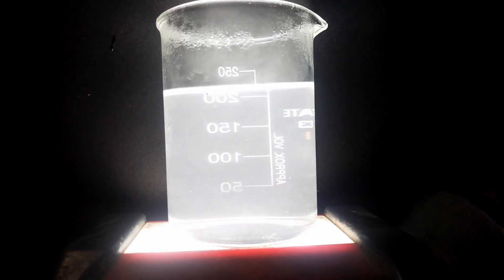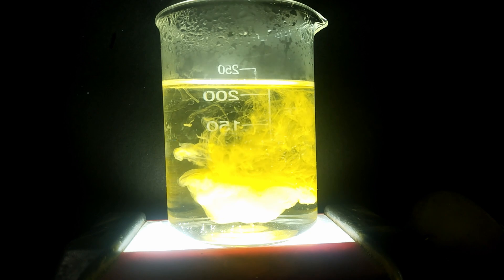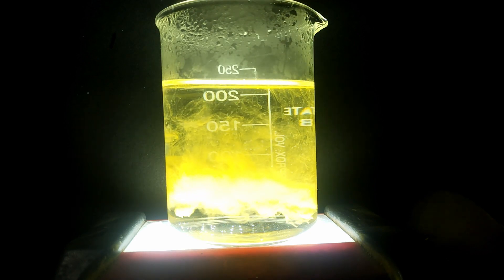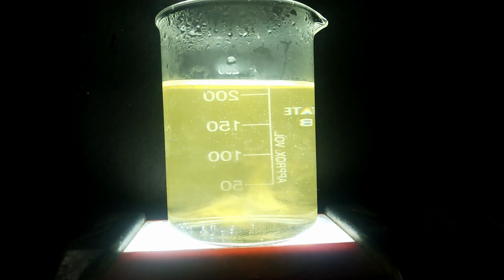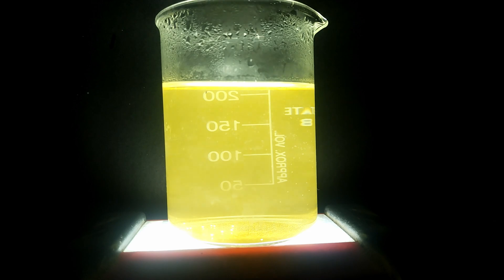To this hot solution, I added some lead nitrate that I made in the previous conical flask. What you are watching now is the reaction between lead nitrate and potassium iodide. In this reaction, lead iodide forms, which is insoluble in water.